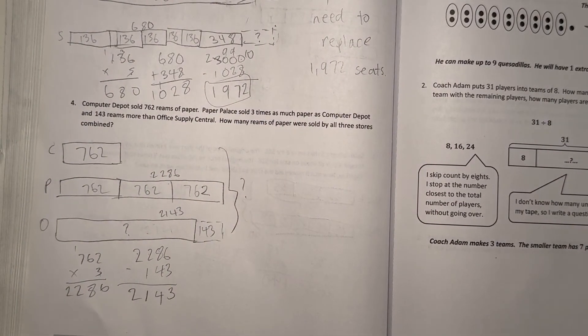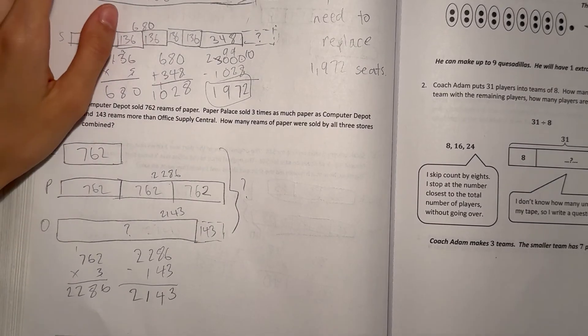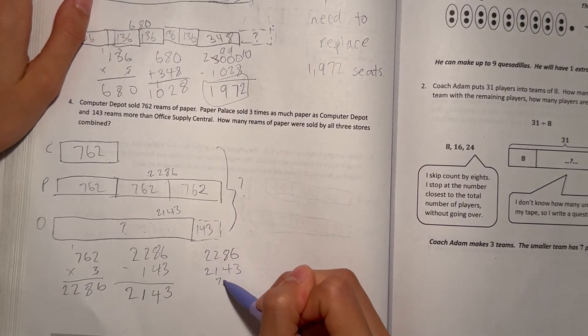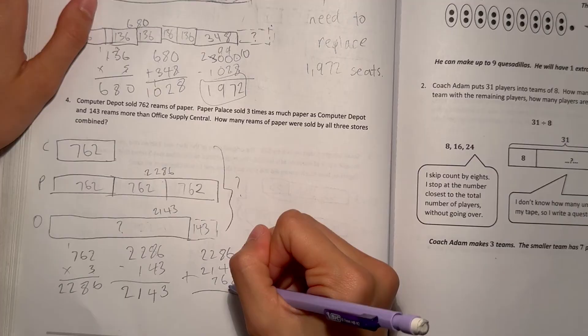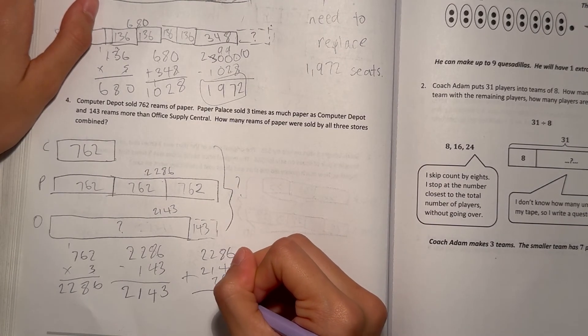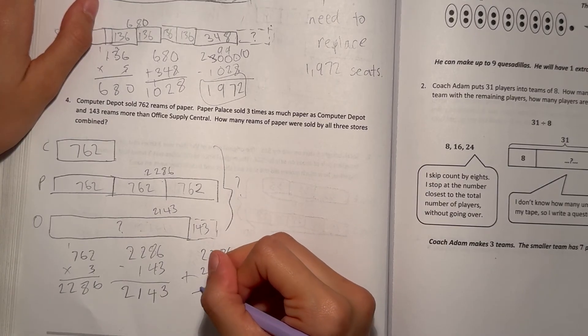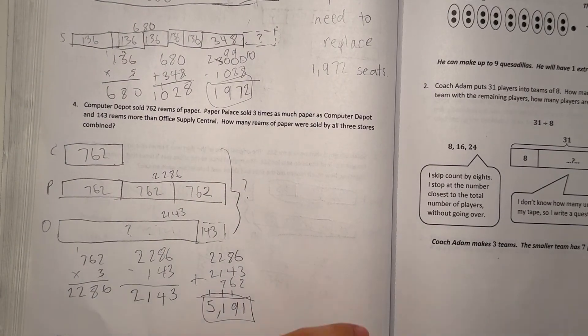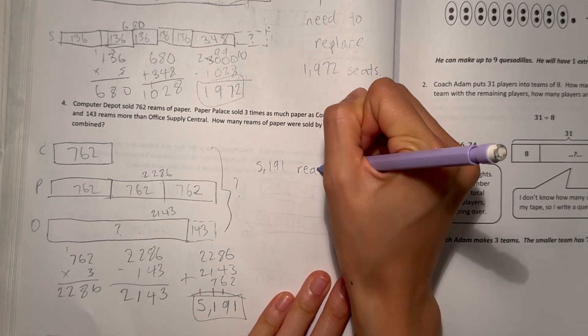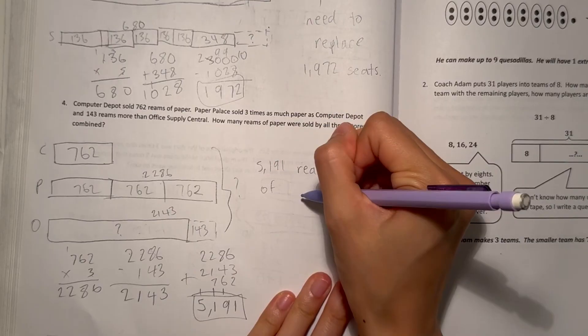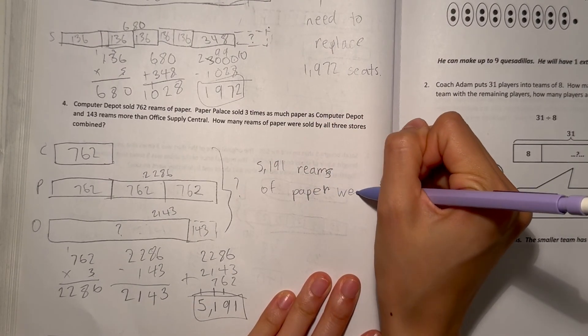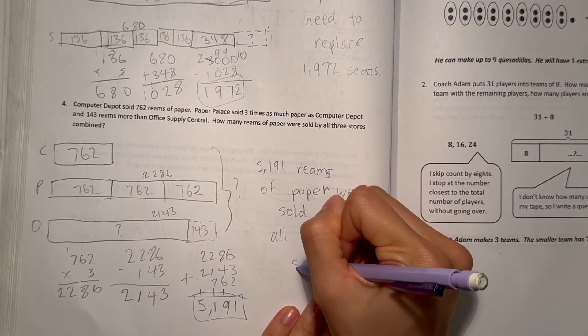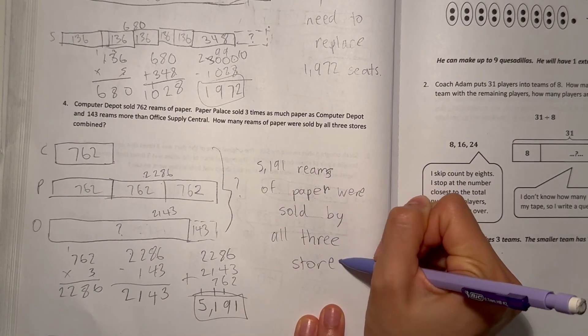But it does ask how much paper they sold all together. So now we add. We have 2,286 plus 2,143 and Computer Depot, 762. Add it all up. 6 plus 3 is 9 plus 2 is 11. 8 plus 4 is 12 plus 6 is 18 plus 1 is 19. 2 plus 1 is 3 plus 7 is 10 plus 1 is 11. And 2 plus 2 is 4 plus 1 is 5. So 5,191. That means 5,191 reams of paper were sold by all three stores.